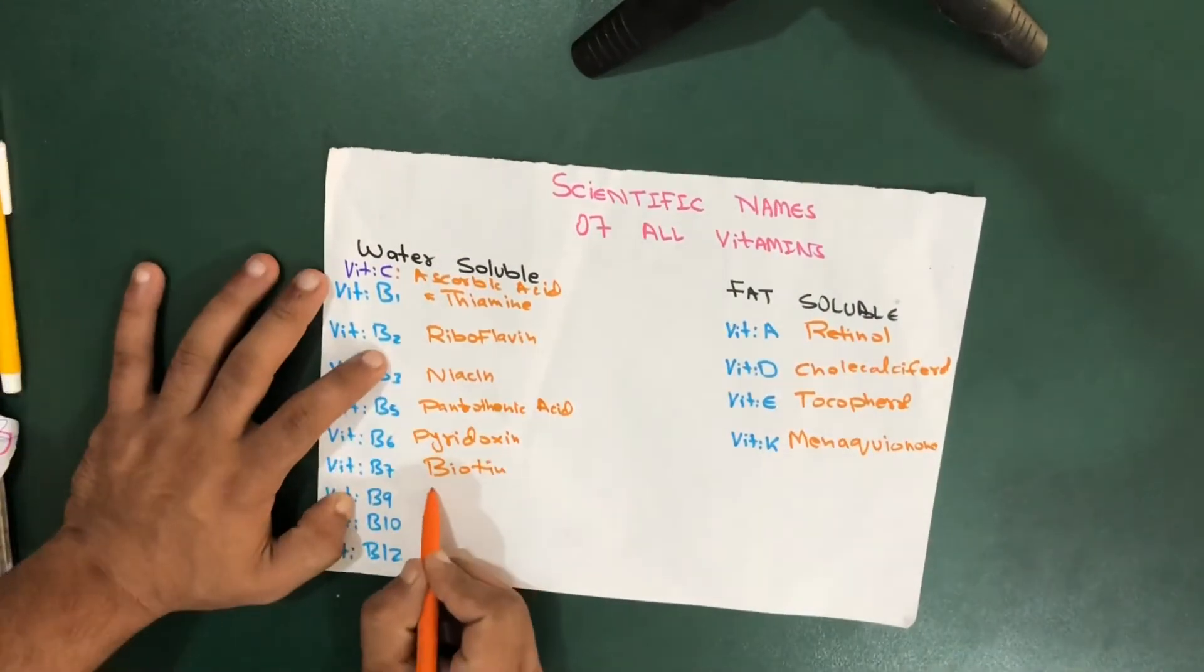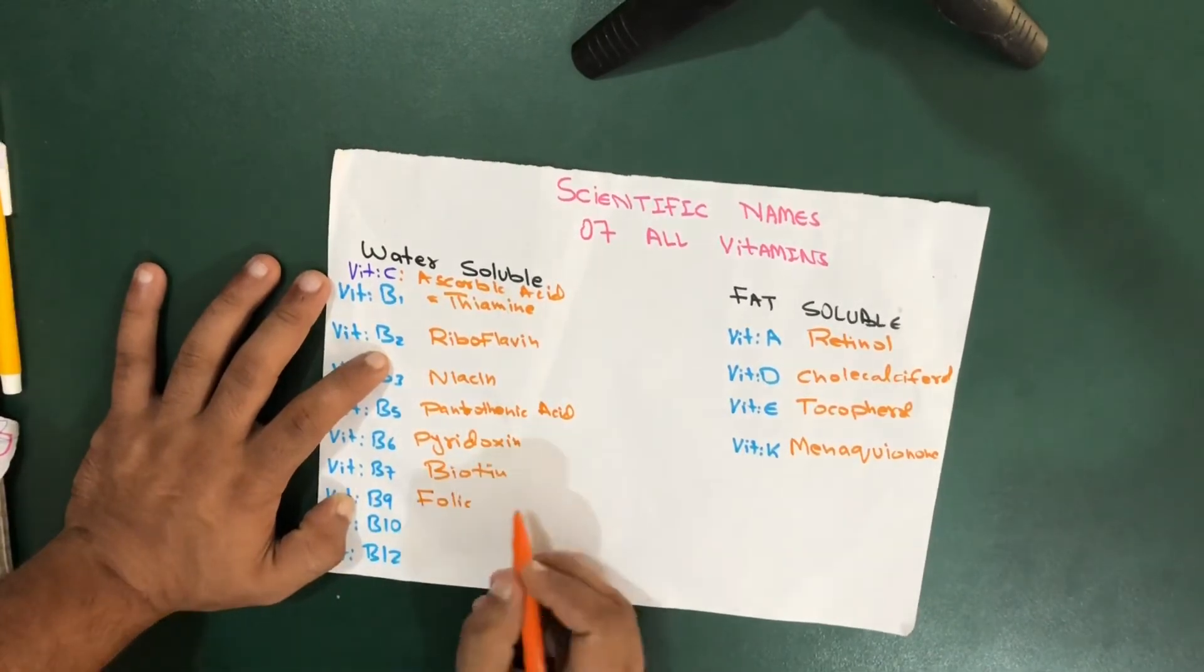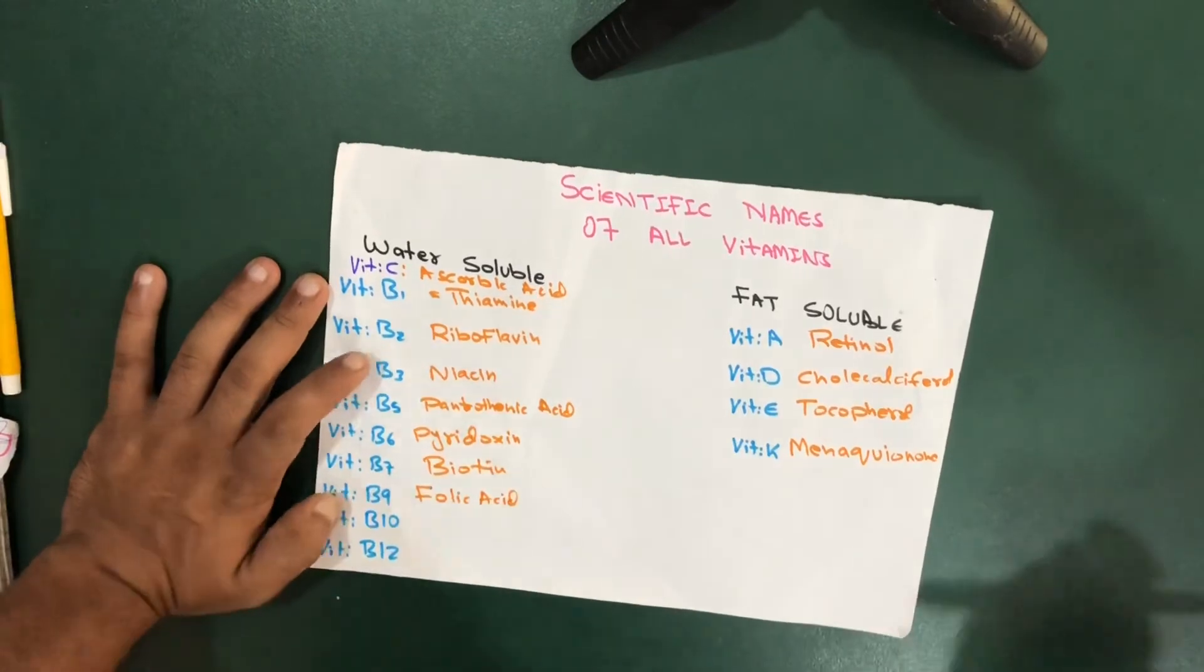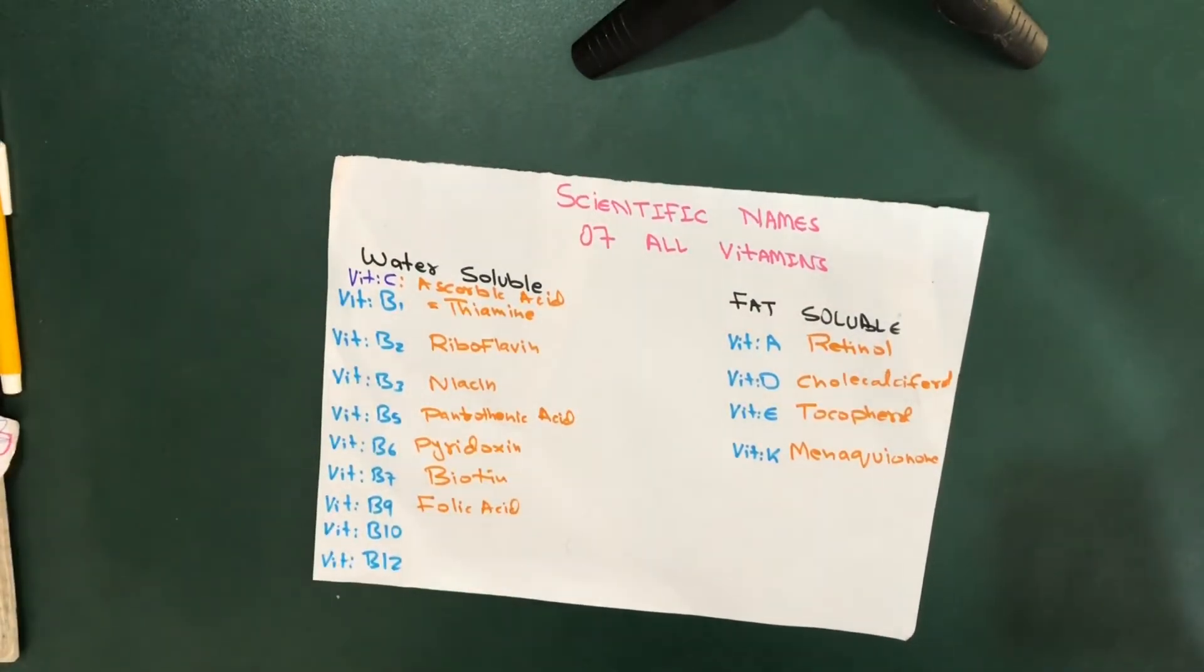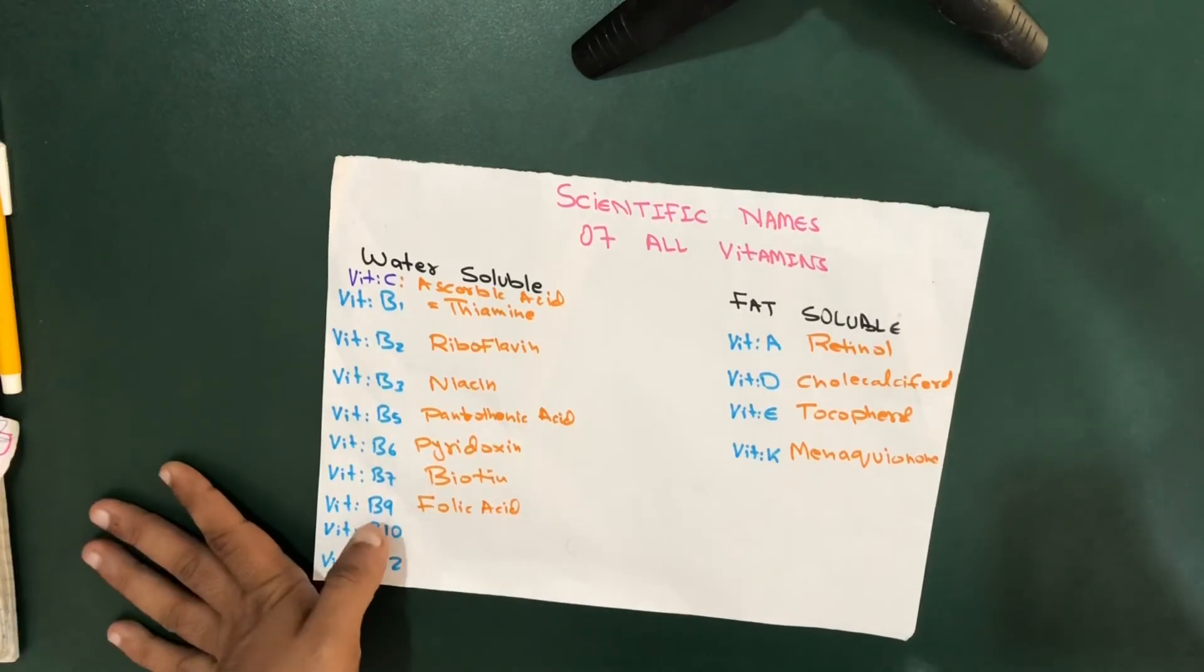For vitamin B9, which is also called folic acid, which is very necessary for RBC maturation and is given to pregnant women because of their developing fetus's needed blood circulation. It's very necessary for maturation of RBCs.